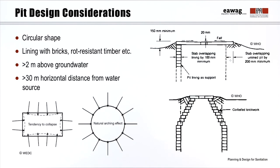Now let's look at some general design considerations for single pits. Pits may be circular or rectangular in plan as shown in this image. Round pits are more suitable because the earth pressure is evenly distributed, creating a natural arching effect. Rectangular pits have a tendency to collapse. Typically, a pit is at least 3 meters deep and 1 meter in diameter.